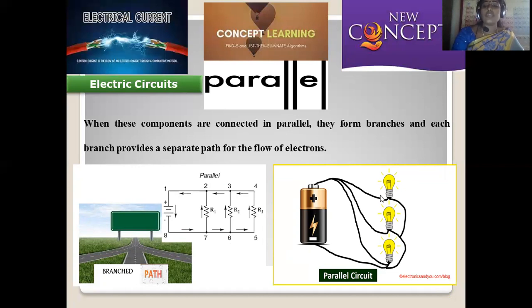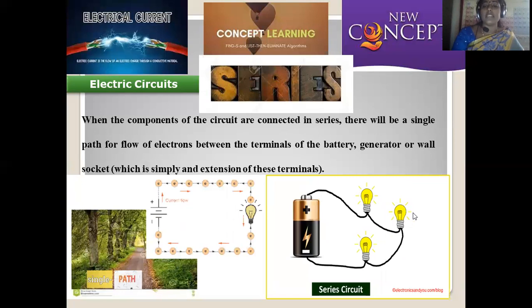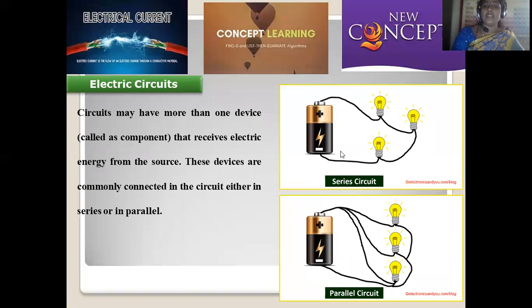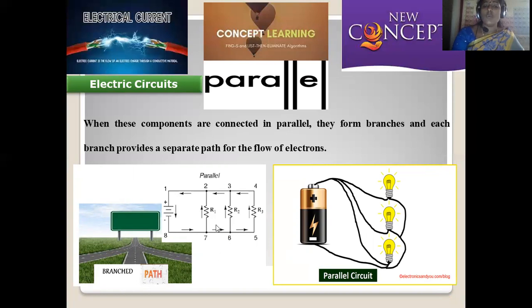In a parallel connection, both the positive end and negative end from the battery directly link with the bulbs. In series, one bulb leads to the next, but in parallel both bulbs are directly connected to the battery. Parallel lines are connected to the electrical battery — all are drawn in parallel lines. In series, unidirectional movement is possible, whereas in the parallel kind, multiple origins and multiple pathways can be observed with branching, which is clearly visible in the diagram.